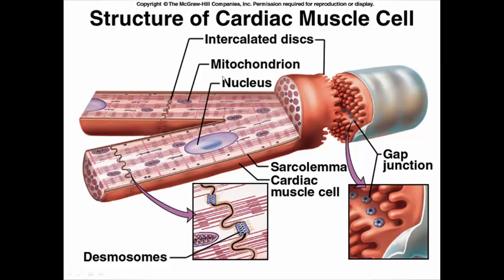Here's a cardiac muscle cell here in the center. Compared to skeletal muscle, it has the same striation patterns that we see. But remember, skeletal muscle is voluntary and cardiac muscle is involuntary — and that's really the only thing they have in common with those striations. Otherwise, there are a lot of differences between them.